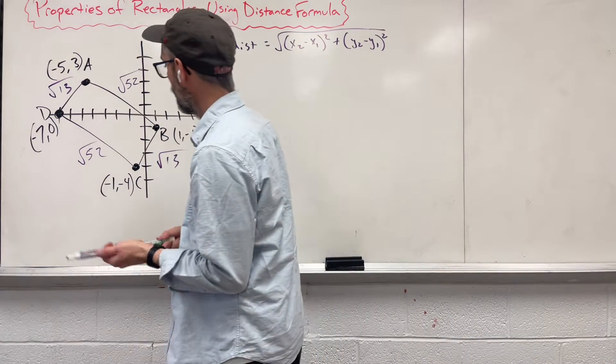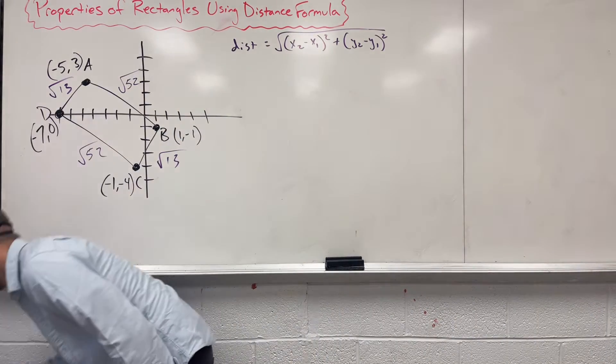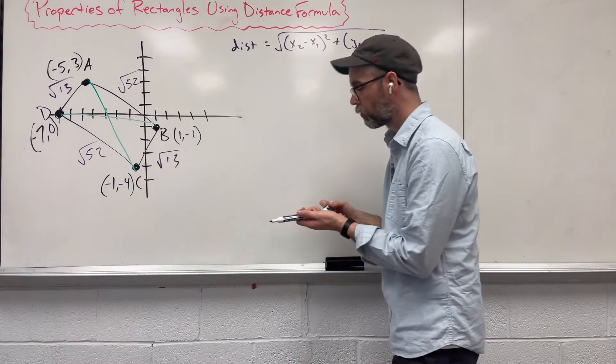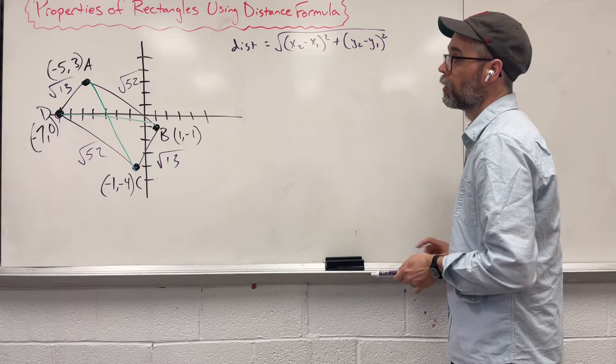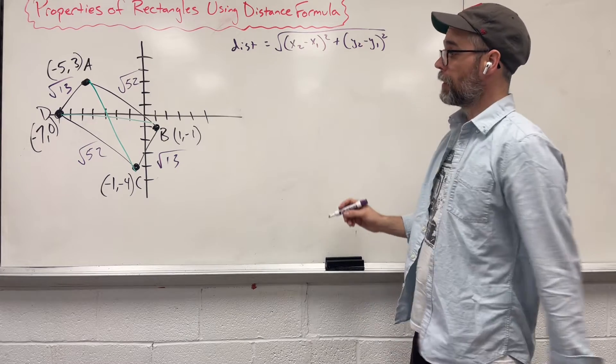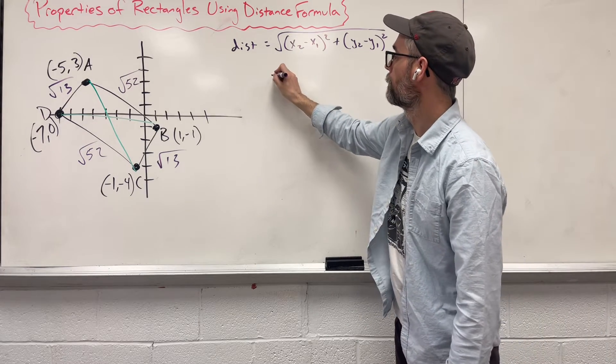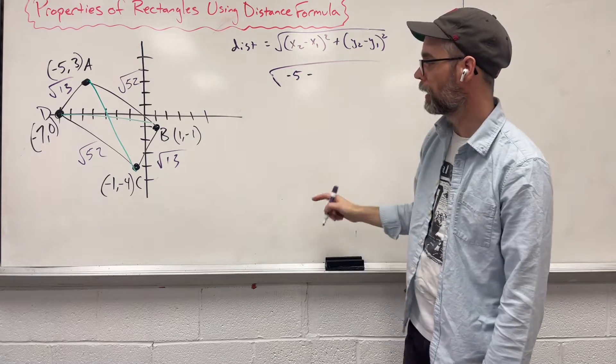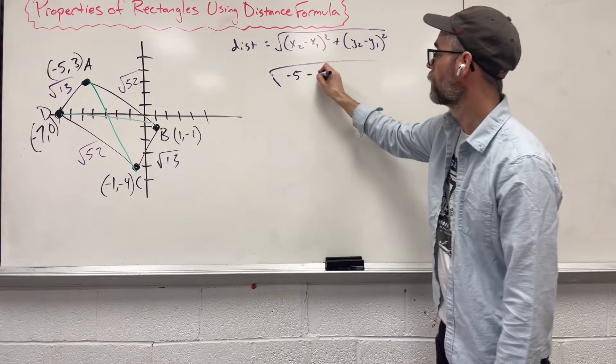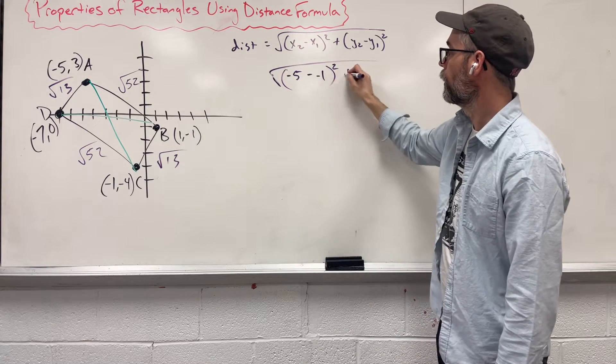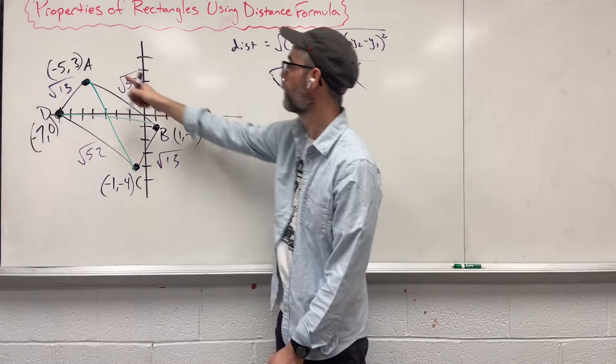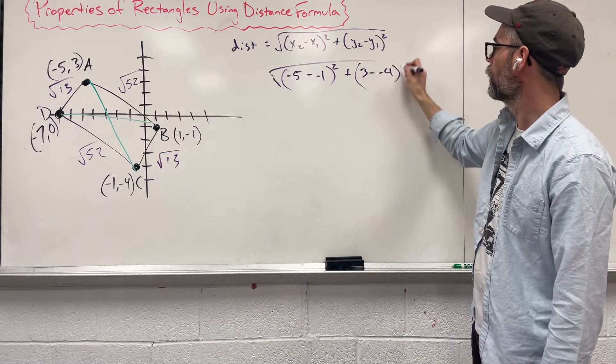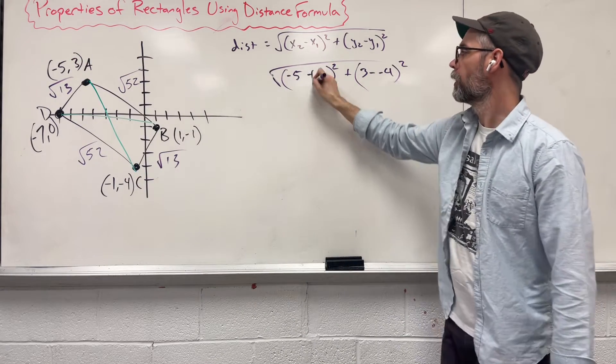So we're looking at A, C, and D, B. We're trying to figure out where those two things mean. So AC, one more time. We have x's, negative 5 minus negative 1, square it. Plus my y's, we started up here, 3 minus negative 4, square it. Giving us, let's see, plus, plus.